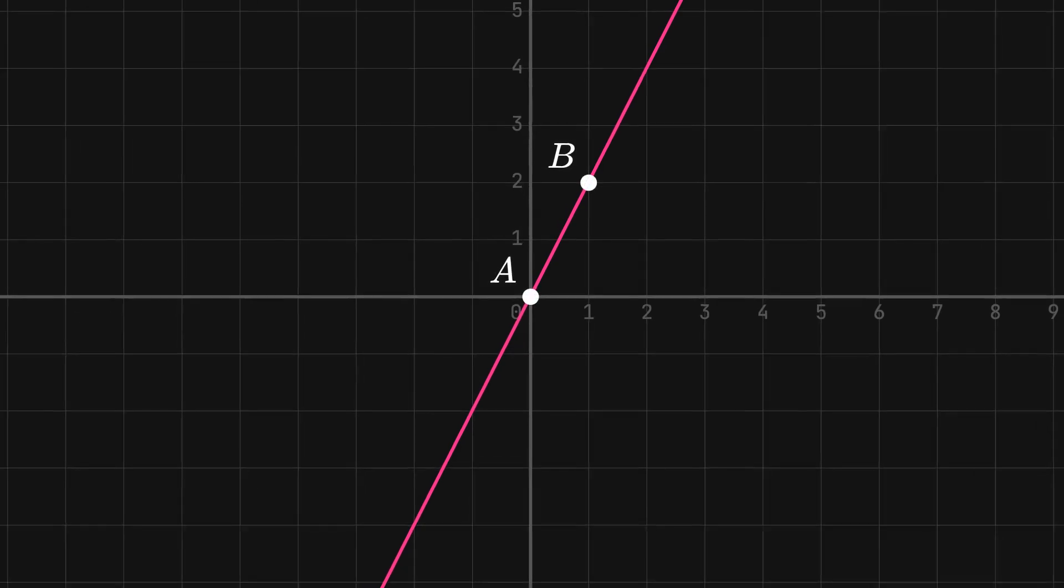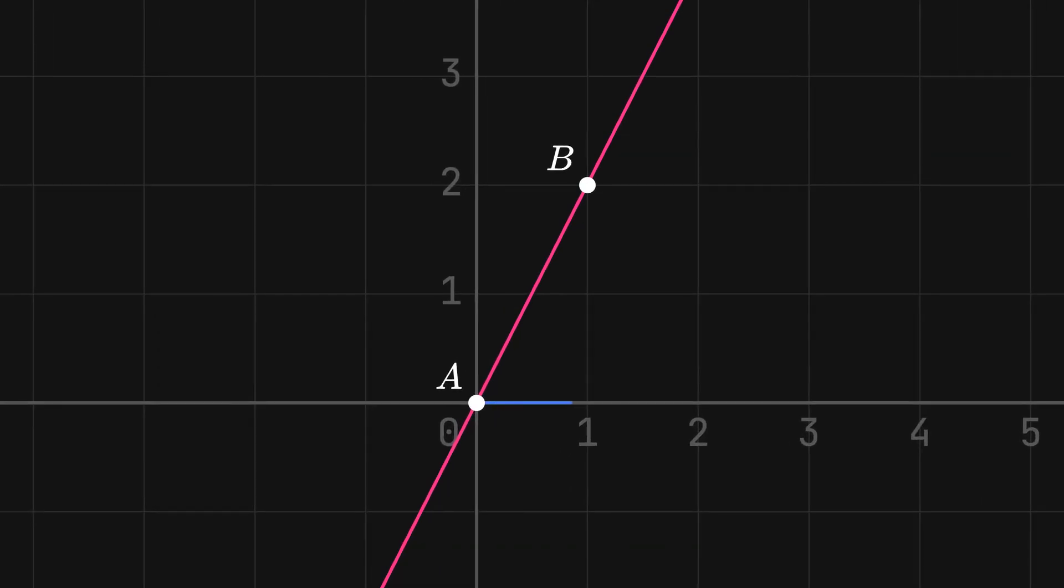Let's graph a linear function, f of x equals 2x. If we have two points on the line, A and B, the horizontal distance between the two points is the blue line, and the vertical distance between the two points is the green line.